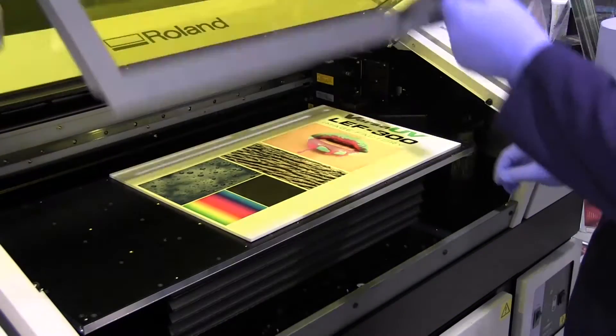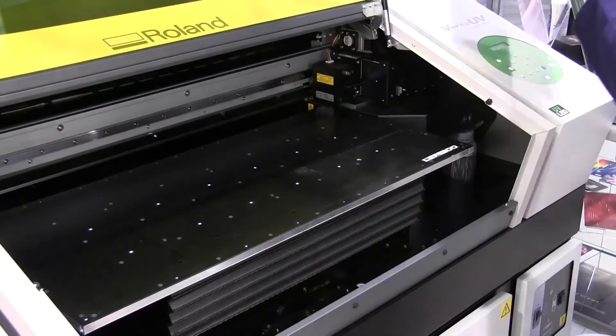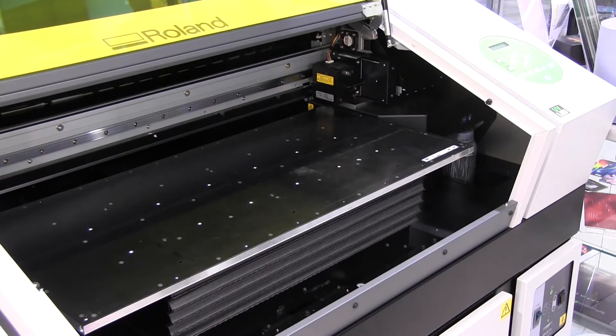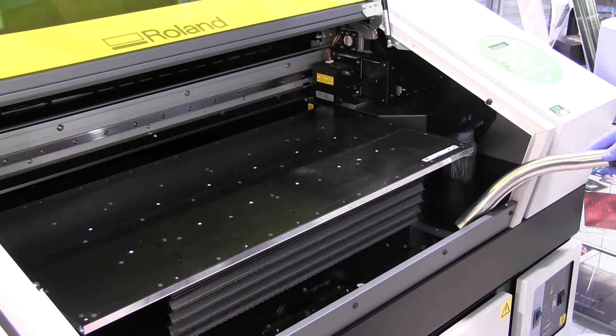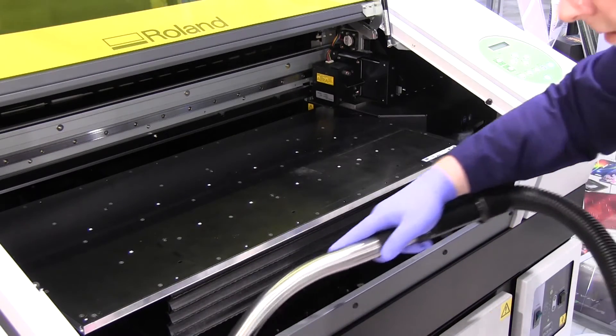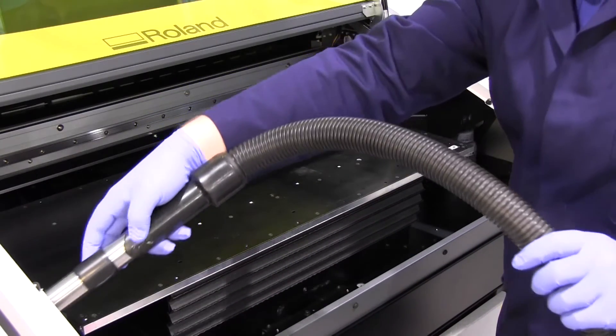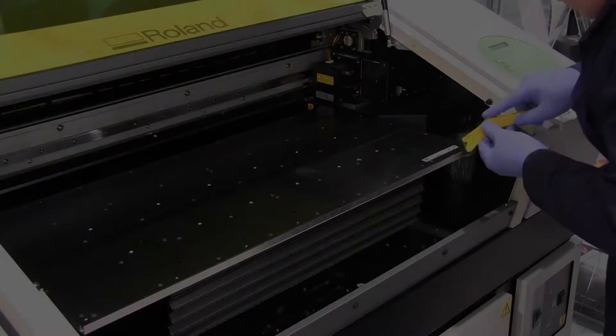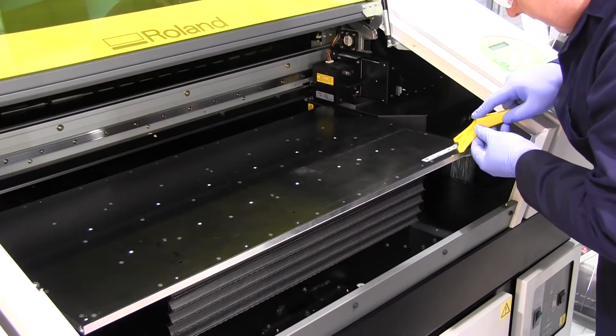First of all, remove any media that is in the machine. Next we are going to need to clean all of the surfaces within the device. For this you could use a vacuum or a tack cloth that will help to pick up any settled dust or loose particles.